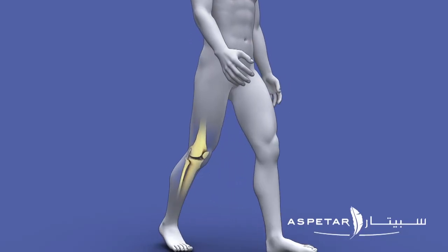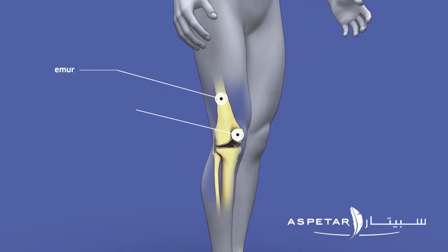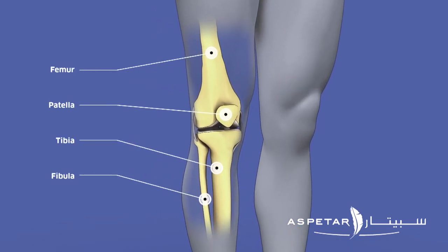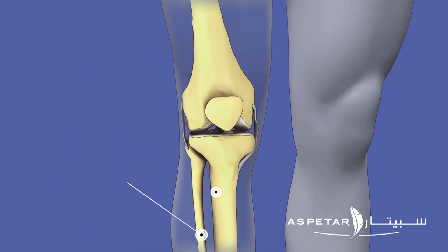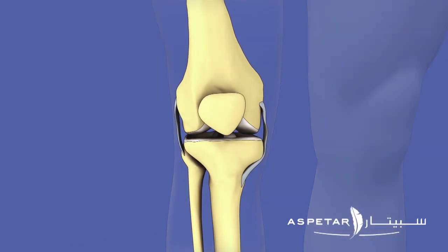However, in most athletes who want to return to pivoting sports, we advise them to get their ACL fixed. ACL reconstruction is a surgery where we use tendons — hamstring tendons, patellar tendons, or quad tendons — to repair and reconstruct the ACL inside the knee. Each tendon has specific advantages and disadvantages, and we inform the patient and pick the best option for their specific reconstruction.